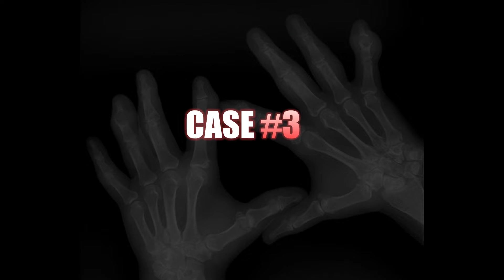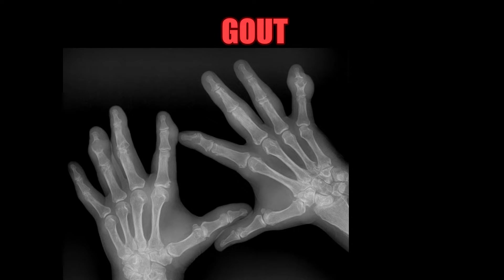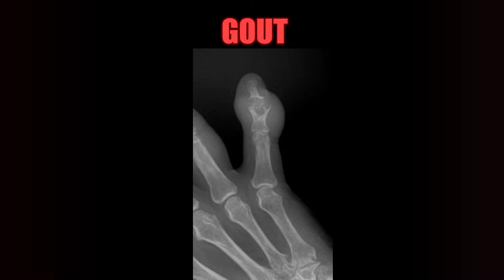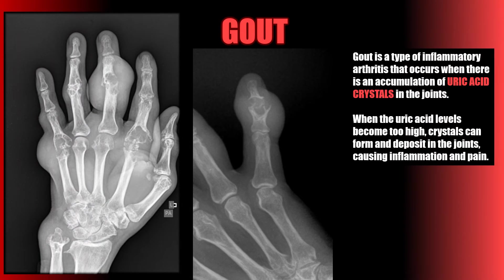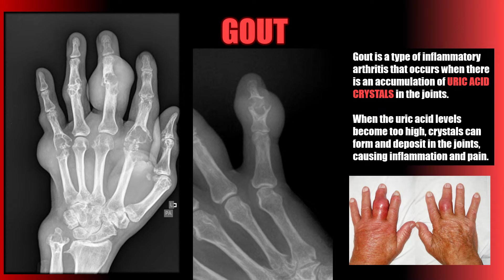Case number three. Gout can present on X-ray with large soft tissue swelling and well-defined punched-out erosions with sclerotic margins in a marginal and juxta-articular distribution. Gout is a type of inflammatory arthritis that occurs when there is an accumulation of uric acid crystals in the joints. When uric acid levels become too high, crystals can form and deposit in the joints, causing inflammation and pain.